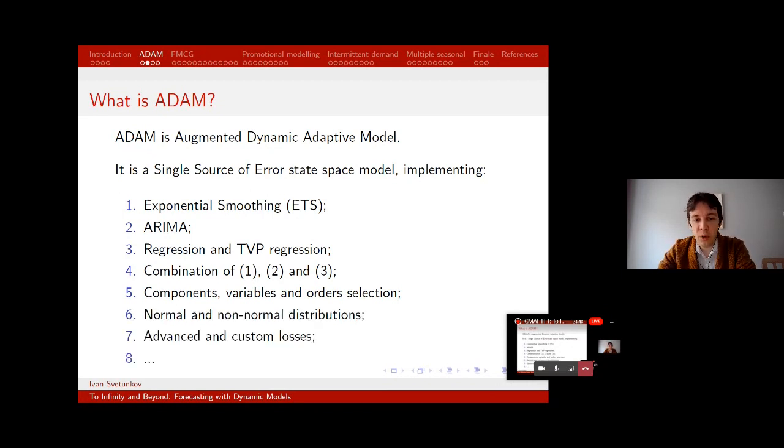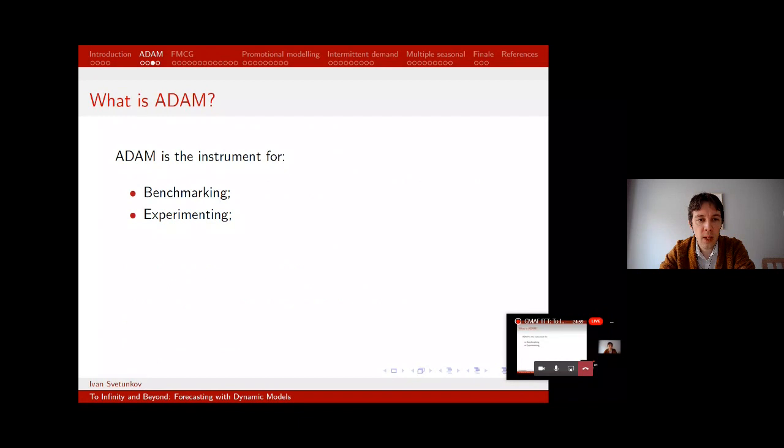And it implements these three things that I've already mentioned, plus different combinations of the three. It also supports components and variables and orders selection mechanism. Normal, non-normal distribution, advanced and custom losses. So the list is actually quite big what it supports. And I don't have aim to cover all the aspects here. In a way you can think of ADAM as a first benchmark. So you have your favorite machine learning methods and you can benchmark ADAM against it and see whether it beats it or not.